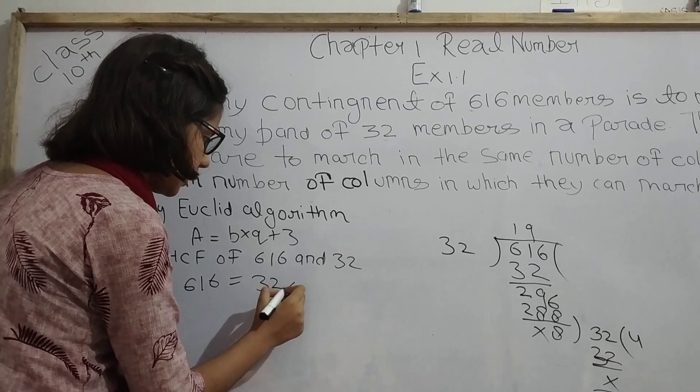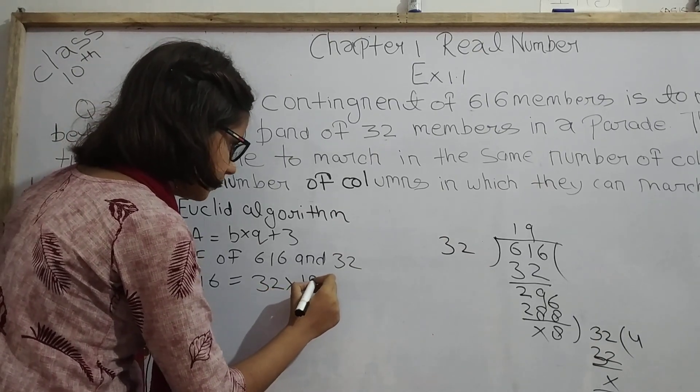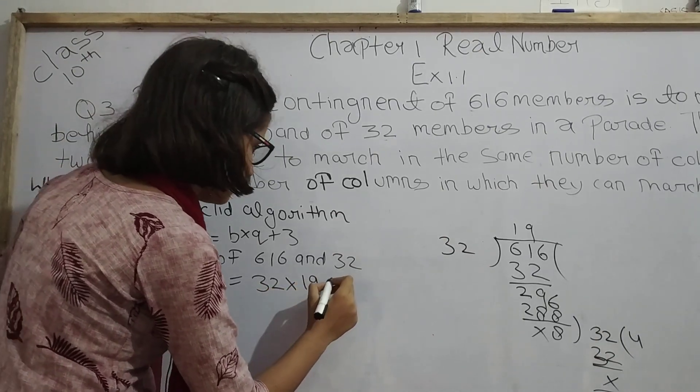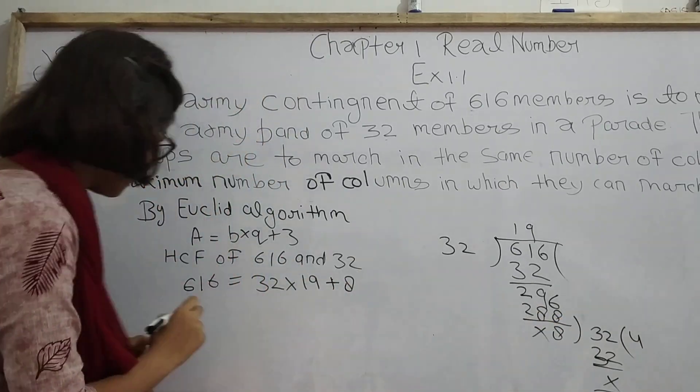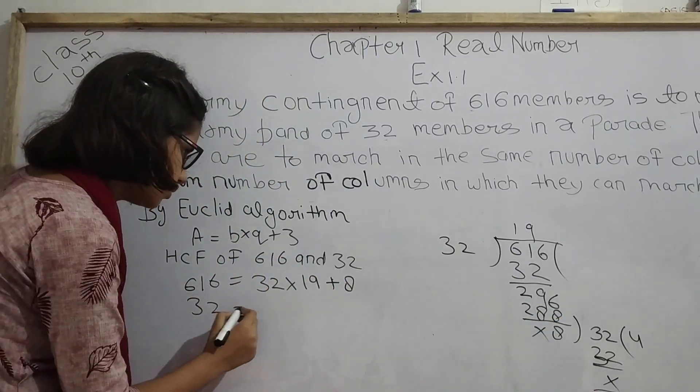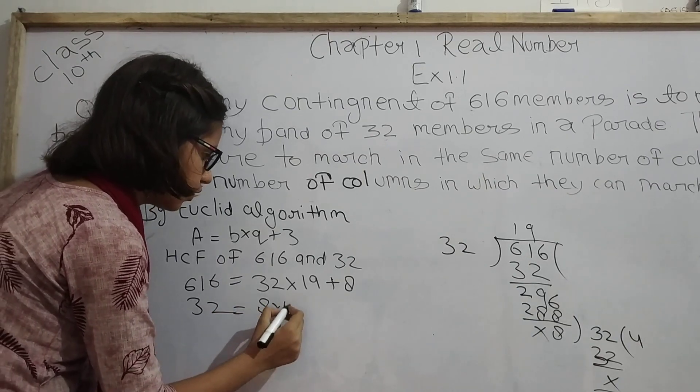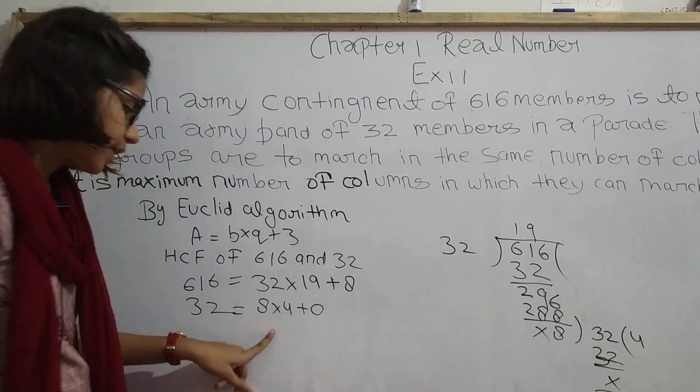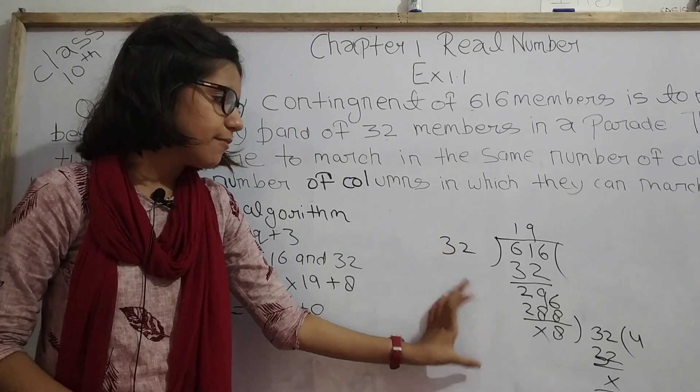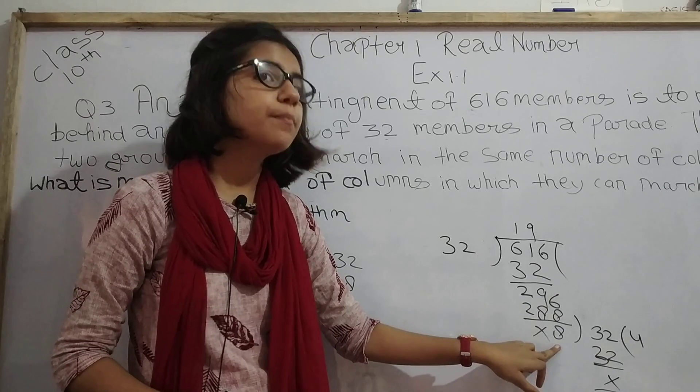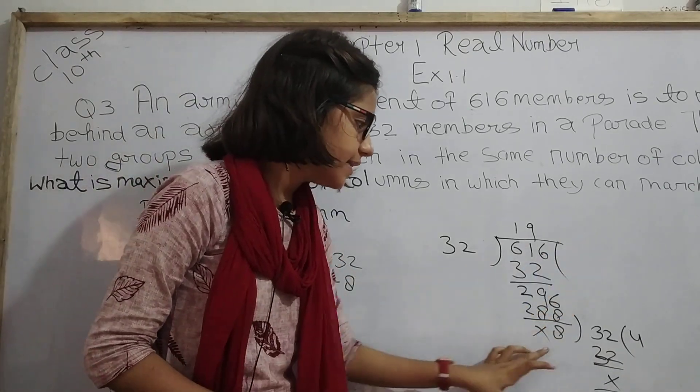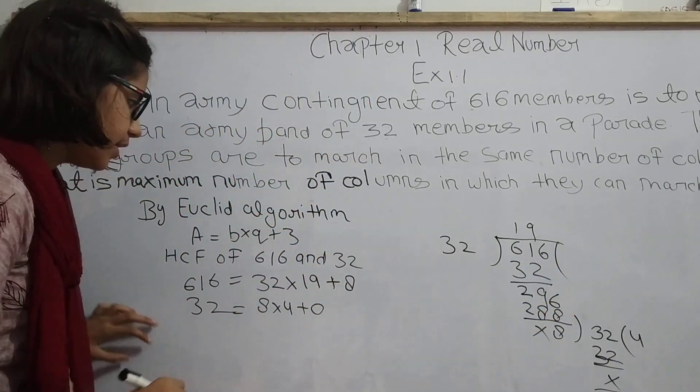Now we have to see what is the HCF of these numbers. The HCF of these numbers is 8, because in the last process, 8 is our divisor, so this will be our HCF.